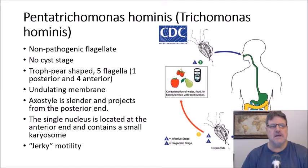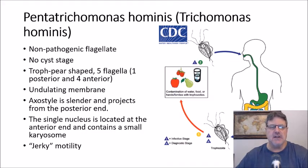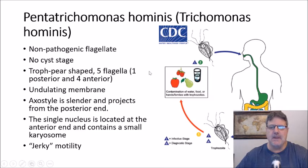Trichomonas hominis, now known as Pentatrichomonas hominis, is a non-pathogenic flagellate with no cyst stage. It's pear-shaped with five flagella — four at the rounded larger anterior end and one at the posterior end — an undulating membrane, and a single nucleus up near that tuft of flagella at the anterior end. Its motility appears jerky on a wet prep.